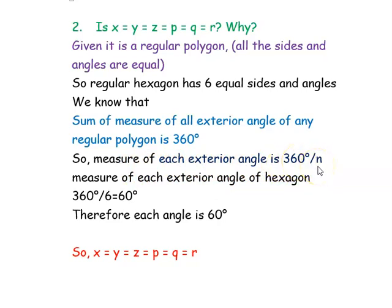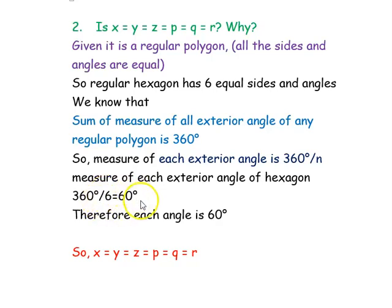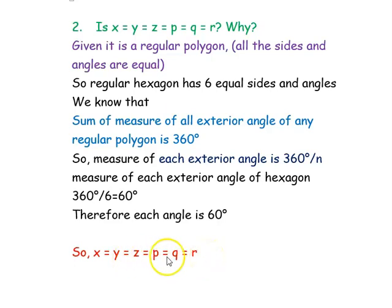Here it is a hexagon, so the number of sides is 6. Taking 360° ÷ 6 = 60°. Since all angles are equal, each exterior angle is 60 degrees. We can conclude that x = y = z = p = q = r, and all six exterior angles are equal to 60 degrees.